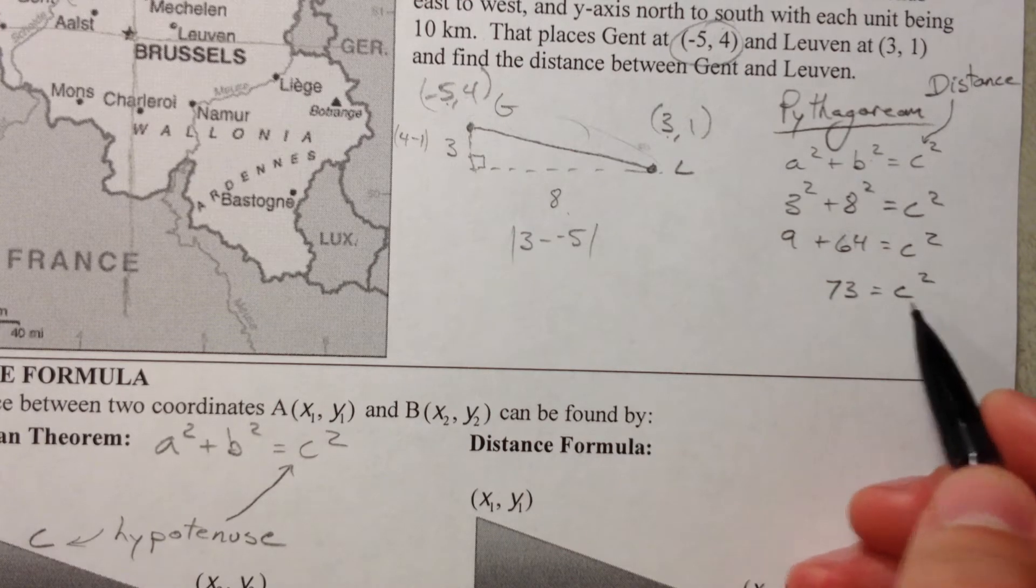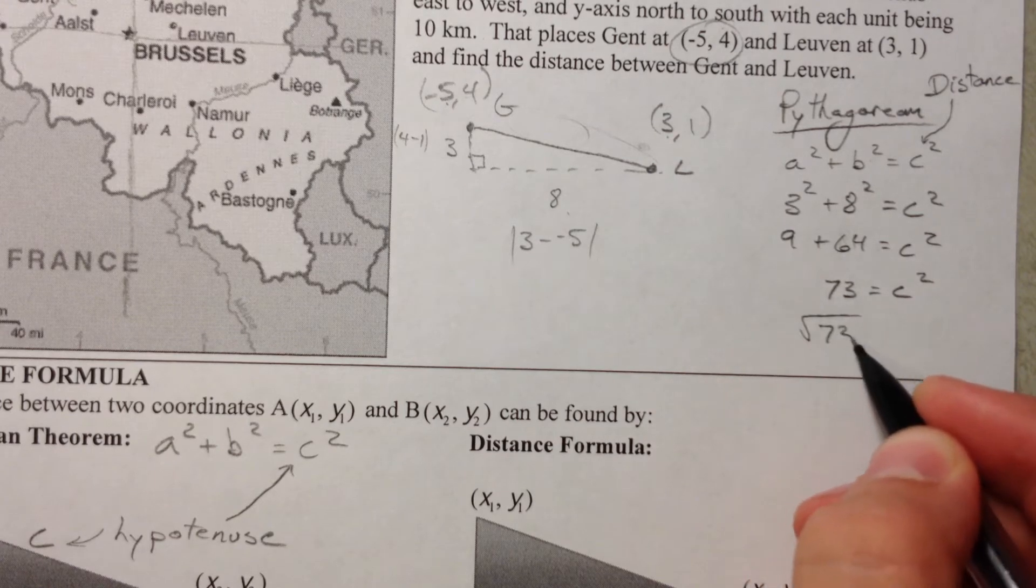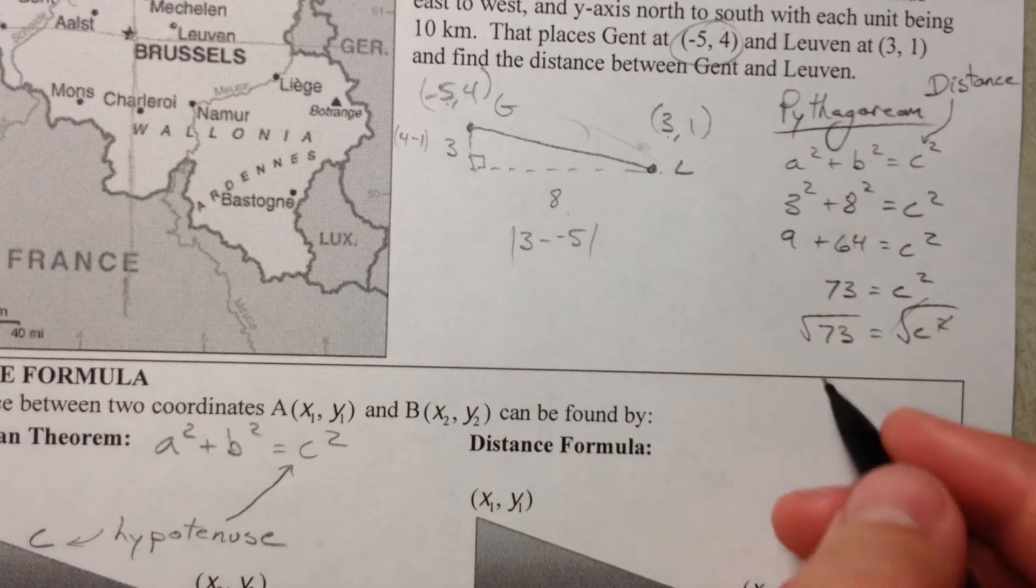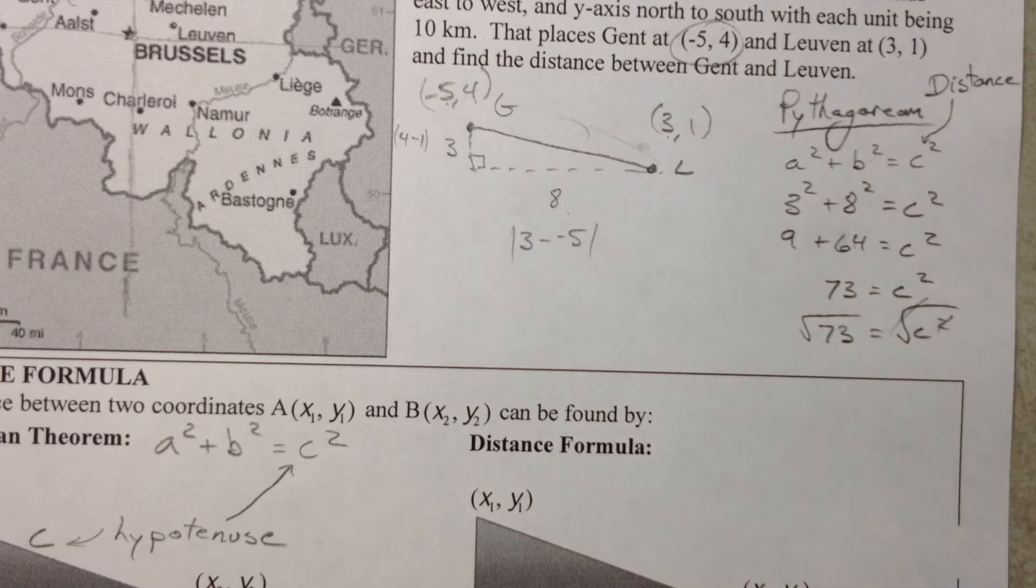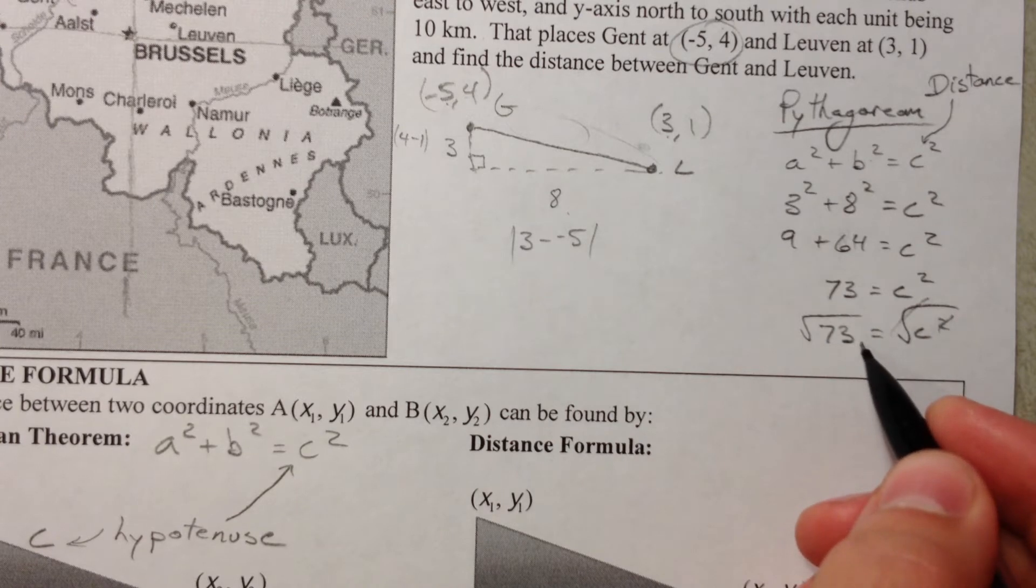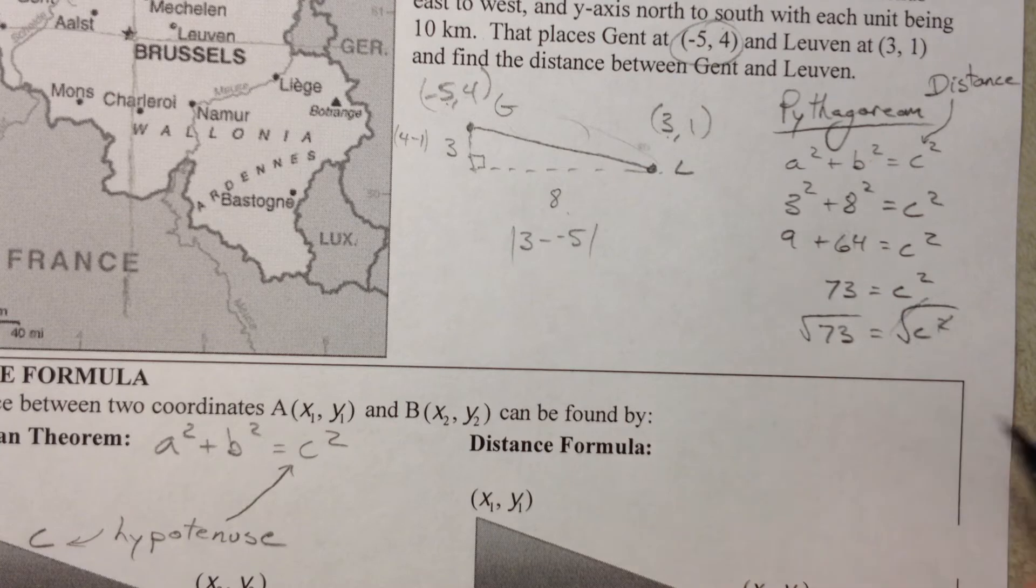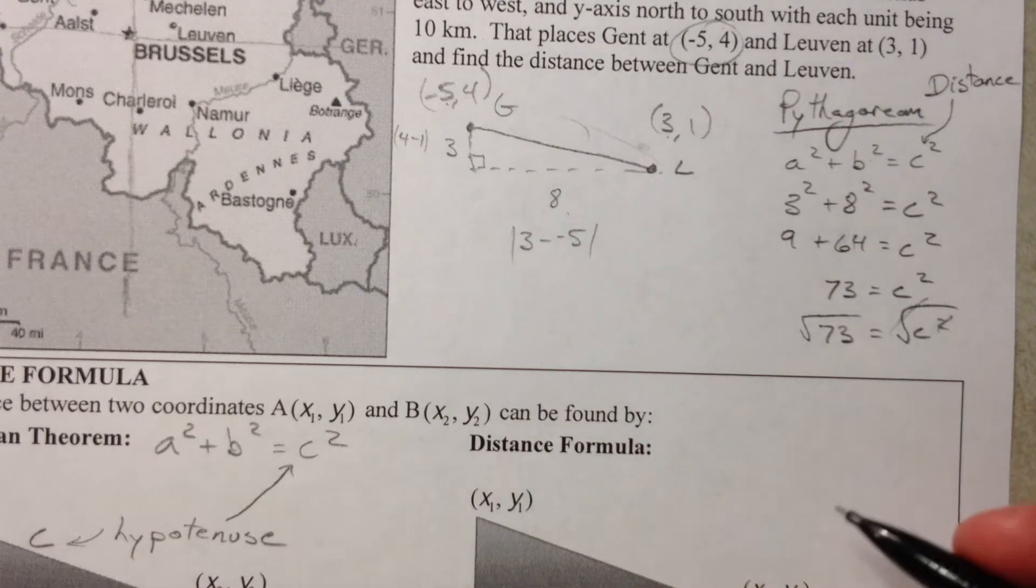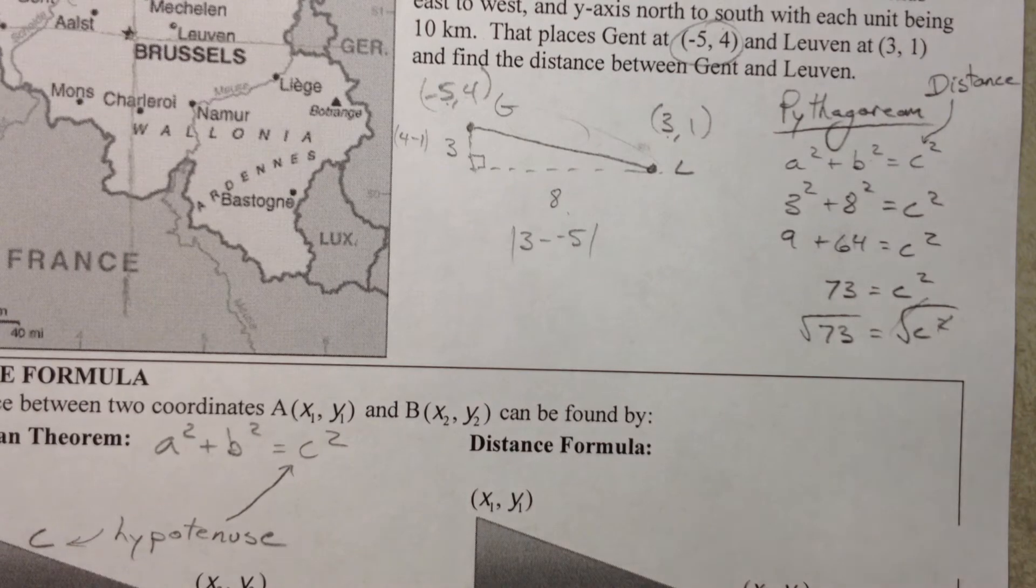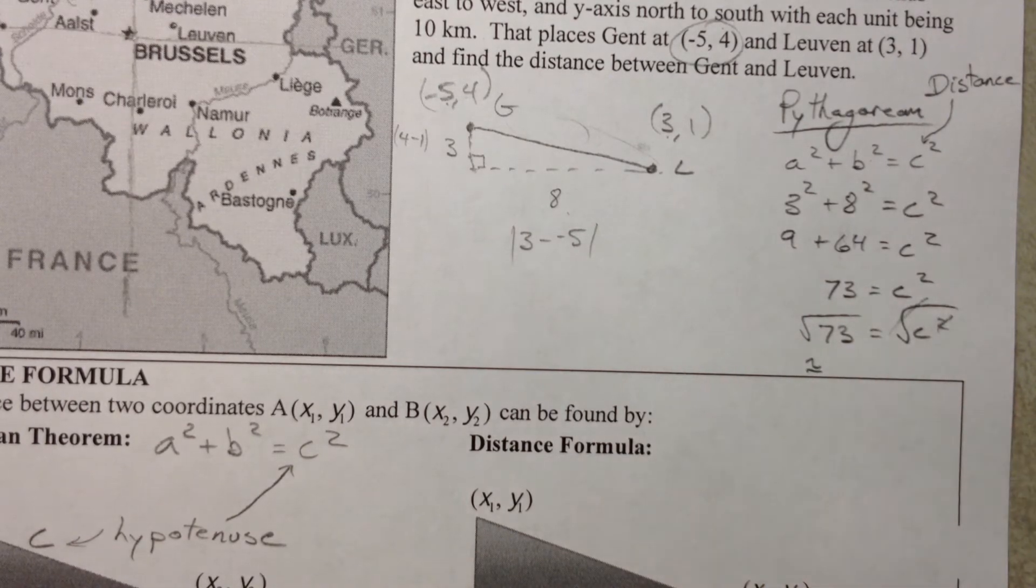And so, that's C. I'm going to take the square root of both sides now. Square root of 73. Square root of C squared. It's going to cancel out that squared. Square root of 73. Well, we know 81 is 9. And we know 64 is 8. So we know it's in between those two. And you guys can approximate that. I actually don't have my calculator on me right now. Otherwise, I'd approximate that a little bit better. And so that is the distance.